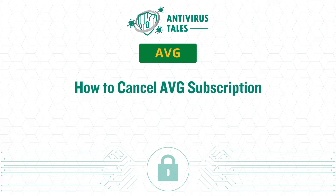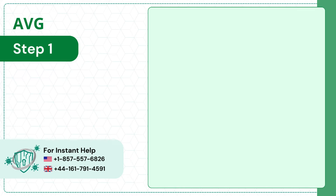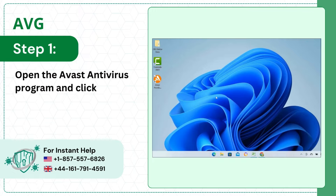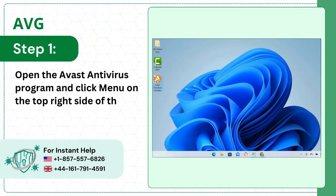How to Cancel AVG Subscription. Step 1: Open the Avast Antivirus Program and click Menu on the top right side of the screen.